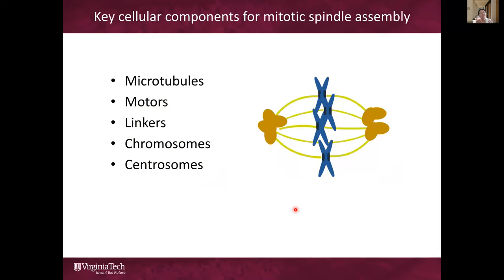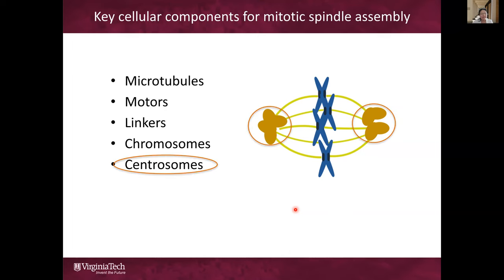The spindle assembly is actually a highly dynamic and complex process. It requires a joint effort of a multitude of molecules and cellular components, including microtubules, motor proteins, linker proteins, chromosomes, centrosomes, and other regulatory components. In the past, there have been a lot of experimental and modeling studies addressing the functional roles of each of these components. But today, I'm going to focus on just the centrosomes.